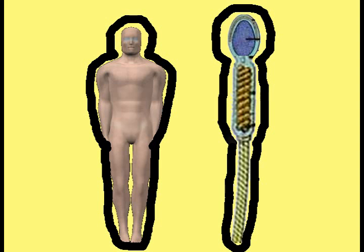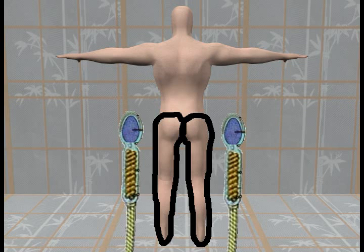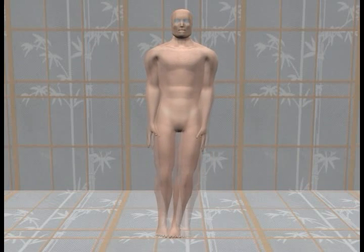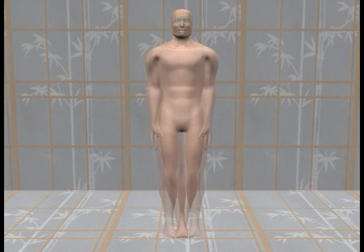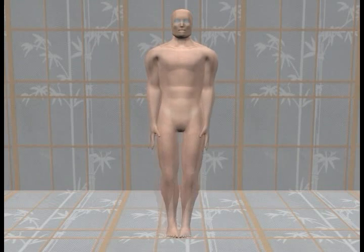According to Happy Theory, the sperm-shaped entire human body, the sperm-shaped arm and chest combination, and the sperm-shaped leg and buttock combination can all move with the characteristic wave-like movement of a sperm. This animation demonstrates what the entire sperm-shaped human body would look like moving with that characteristic wave-like motion.